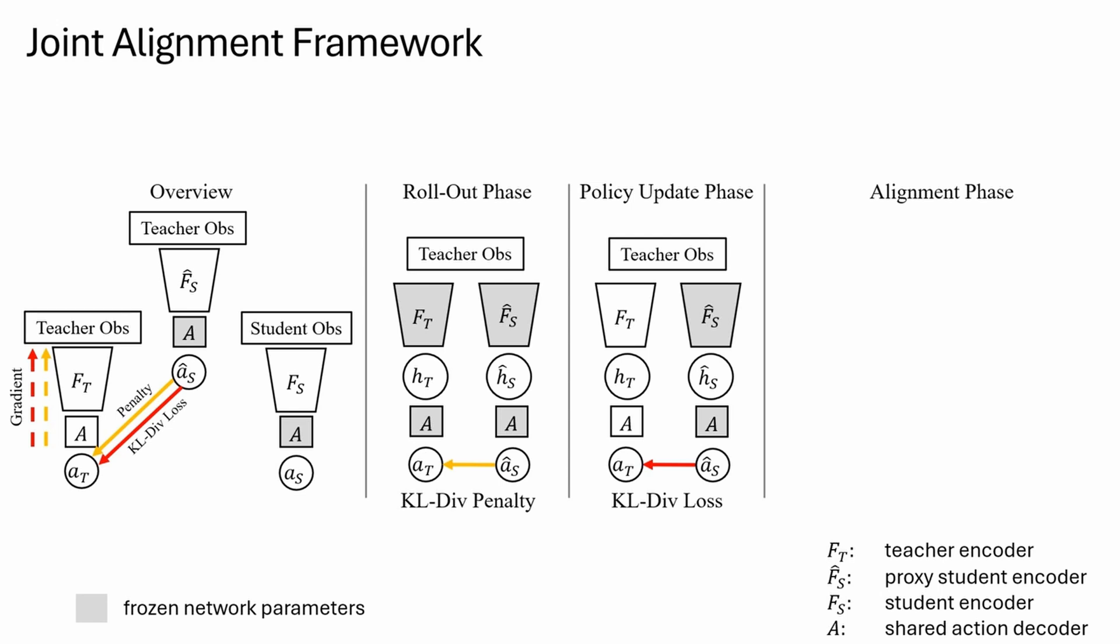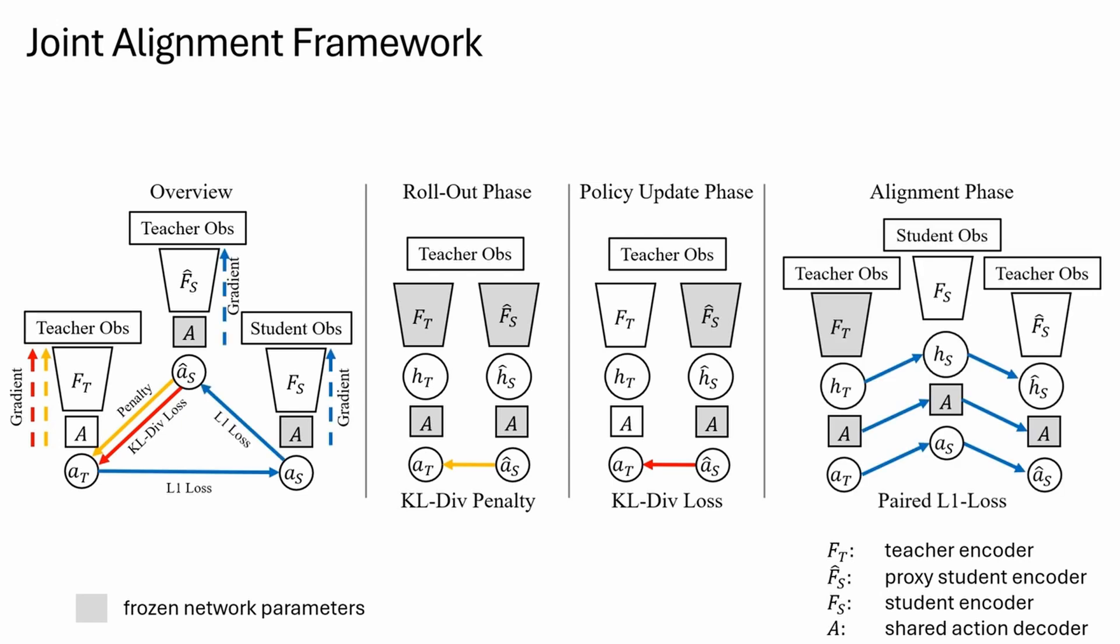In the alignment phase, the features across the encoders of the teacher, proxy student, and student are aligned. This phase is the only one that requires paired teacher and student observations.